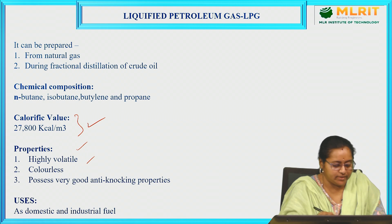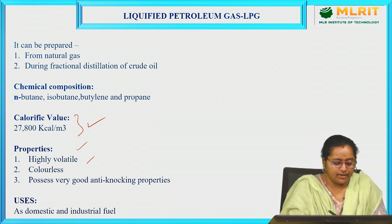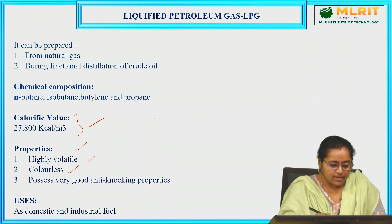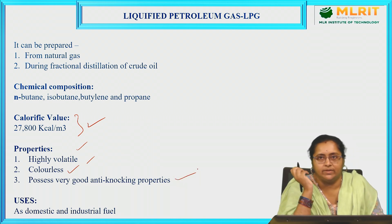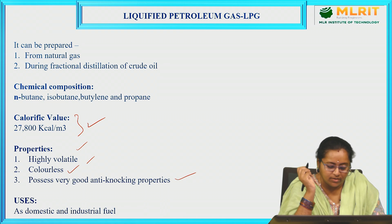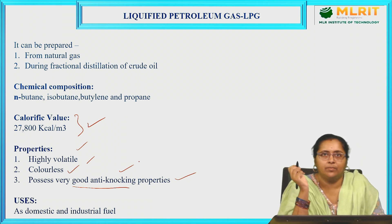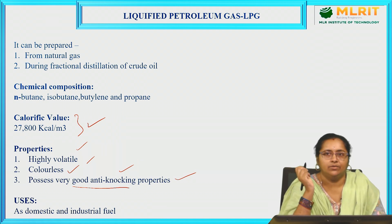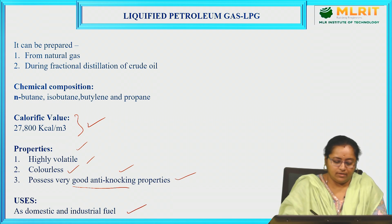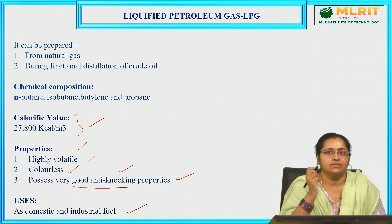Let us discuss LPG's properties. It is highly volatile in nature — it can be easily evaporated. Just like natural gas, it is also colourless. This LPG possesses very good anti-knocking properties. In previous sessions we discussed knocking and anti-knocking properties and examples of anti-knocking agents for petrol and diesel-based engines — LPG has very good anti-knocking properties. Its most important application is that it is used as a fuel for domestic as well as industrial purposes.